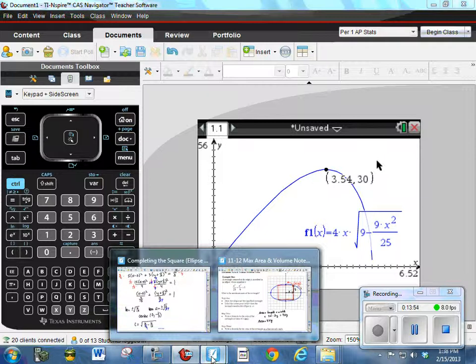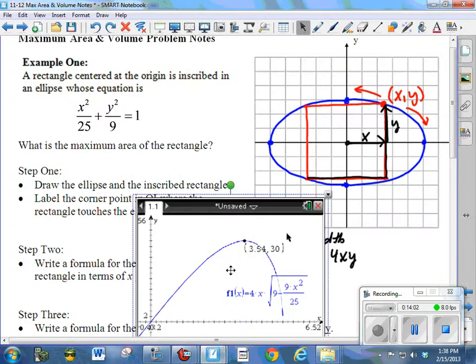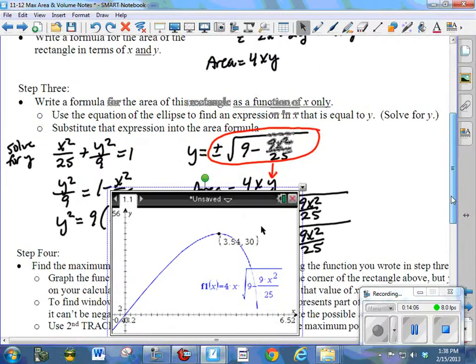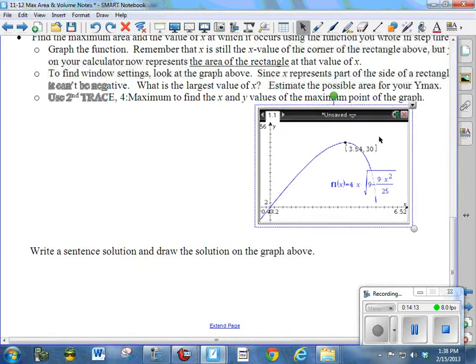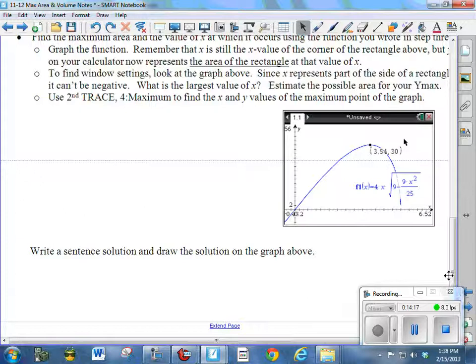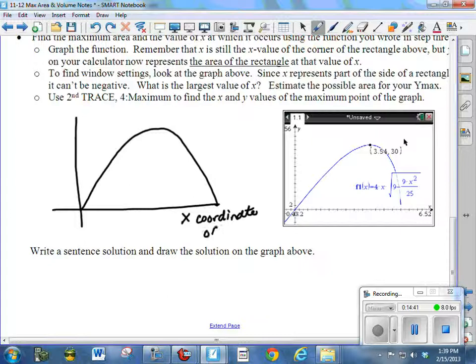So if we go back and look, I think I'm going to drag this picture into my document. There we go. I'll kind of move this down here. Okay. So you can see I have trouble with the calculator sometimes too. So we have, it says write a sentence solution and draw the solution on the graph. So what I wanted you to do, since you can't drag this over, is I want you to actually draw a graph that looks like this. And we have the, this represents the X coordinate of the point.